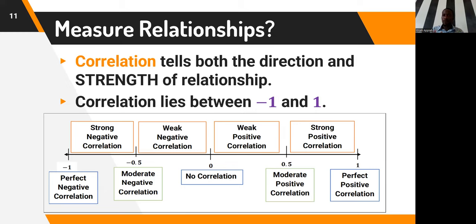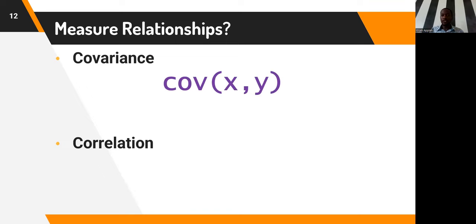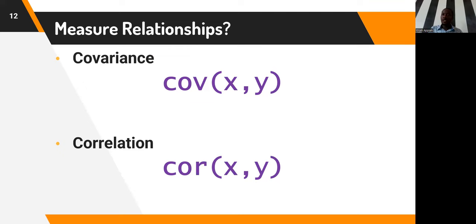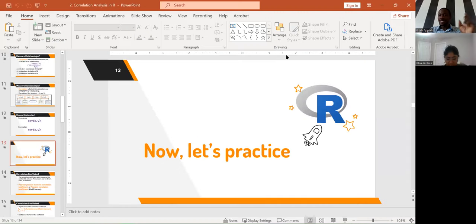Covariance can be implemented in R using the COV function — simply pass into it the two variables you want to measure. If you want to compute the correlation, use the COR function and pass in the two variables. Let's go right into R and implement that.